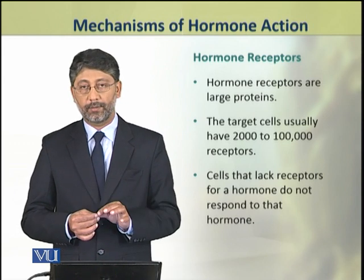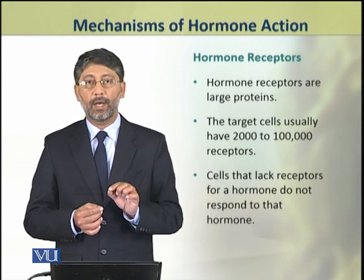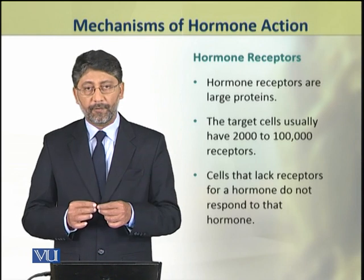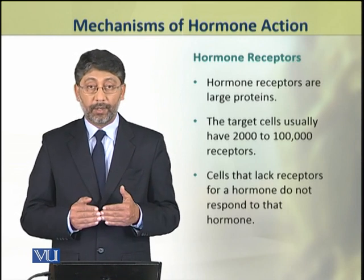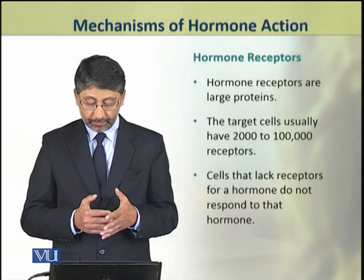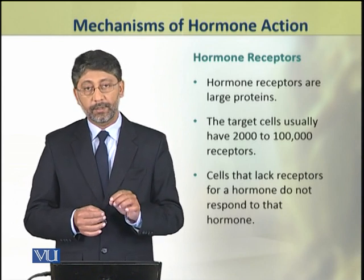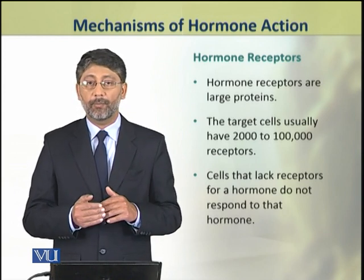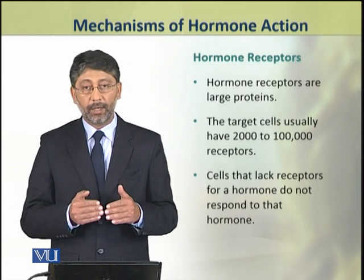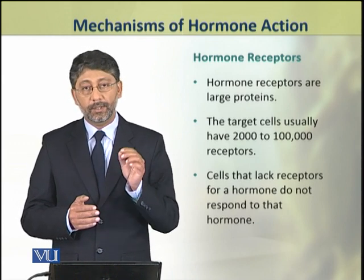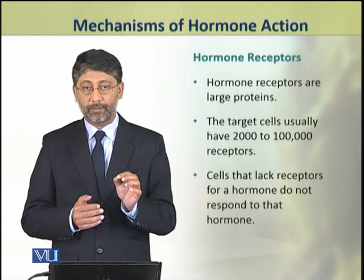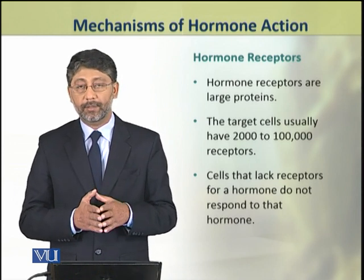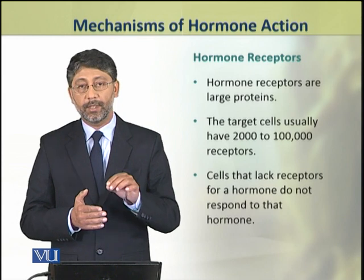Dear students, the receptors of hormones are large proteins. Every target cell may have about 20,000 to 100,000 receptors. Cells which do not have such receptors — hormones do not bind to them. Only a few cells have receptors for each hormone, and hormones do not bind to cells that lack those receptors. This is the reason for the specificity of hormones.